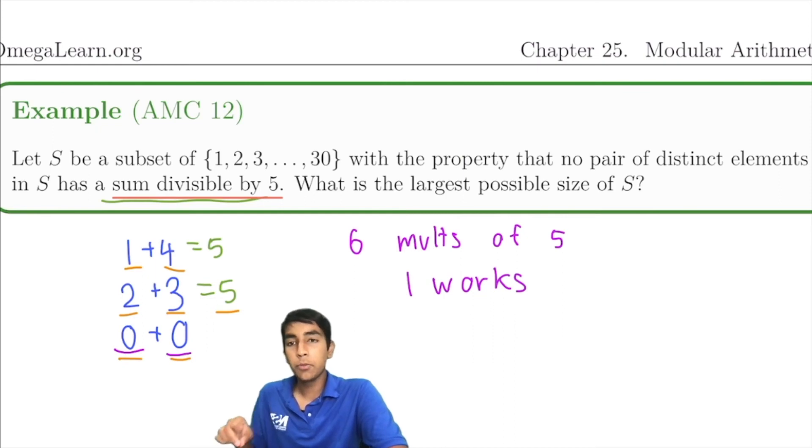We can't have both 1 and 4 mod 5 in our subset. But we can have as many 1s as we'd like as long as there's no 4s. So let's say that we have no 4 mod 5 numbers in our subset. Then we can have as many 1 mod 5 numbers as we'd like.